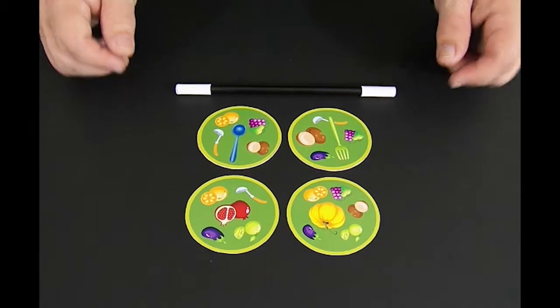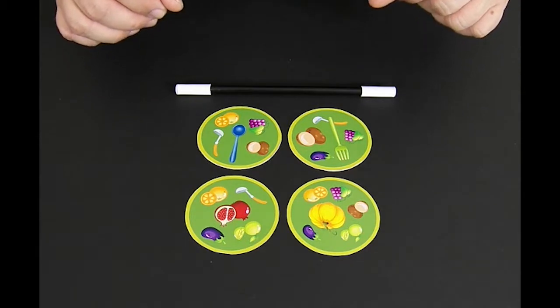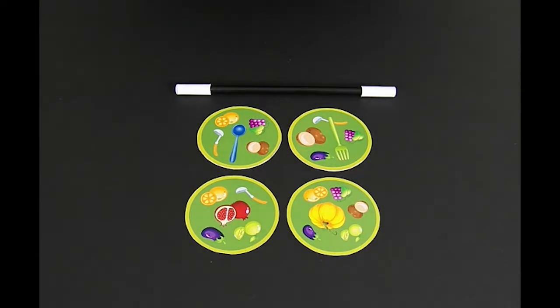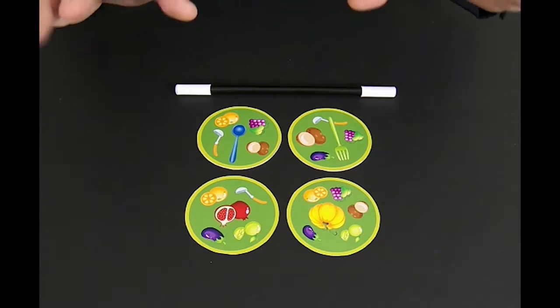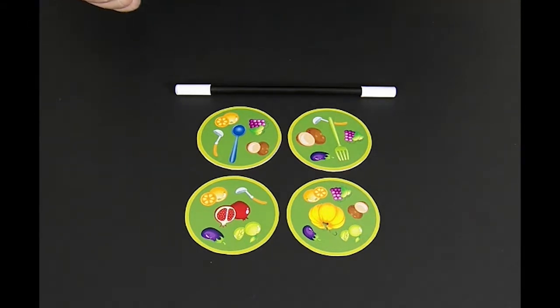Okay, here are the mind reading cards. You have four cards and our wonderful assistant in the studio, Tom, he's going to pick one of the pictures. Just look at it, don't tell me what it is. Take a look at one of the pictures and just let me know when you have selected one.